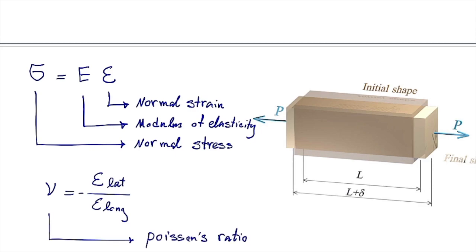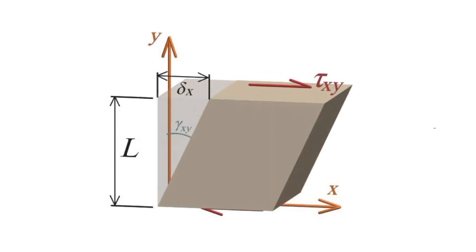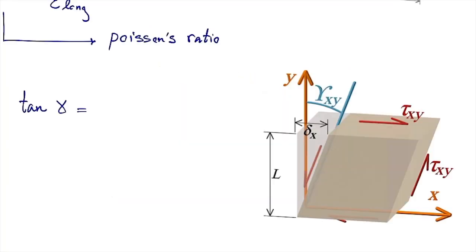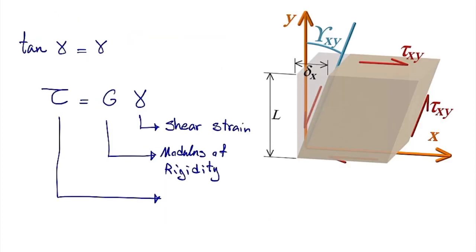Similar to that, we can define shear strain. As we learned before, shear strain is the change in the angle, and that is directly related to the shear stress. Tangent of gamma is equal to gamma if gamma is very small. Finding a relationship between shear stress and shear strain is similar to Hooke's law. Shear stress, or tau, is equal to G multiplied by gamma, where gamma stands for shear strain. G is another constant parameter which we call modulus of rigidity.